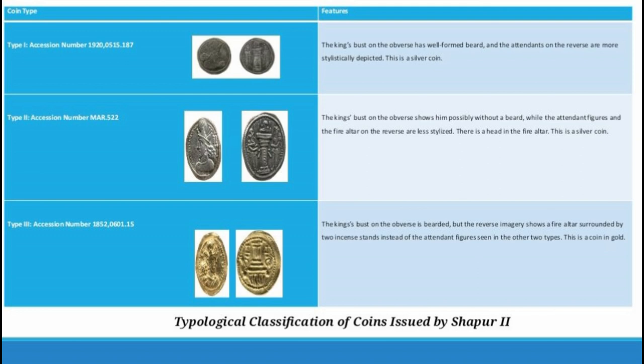There are three basic types of coins identified. The first has the bust of the king on the obverse, and on the reverse, a motif of two attendant figures with a fire altar in between them, showing fire on the standing altar piece. The second type again has the bust of the king on the obverse, but on the reverse there is a slight change — the two attendant figures and altar are present, but there appears to be a human head in place of the fire.